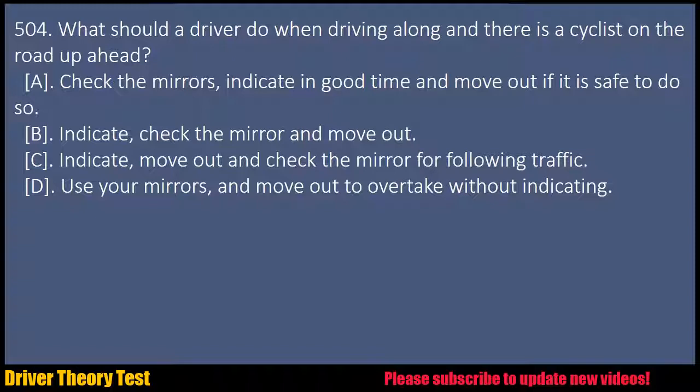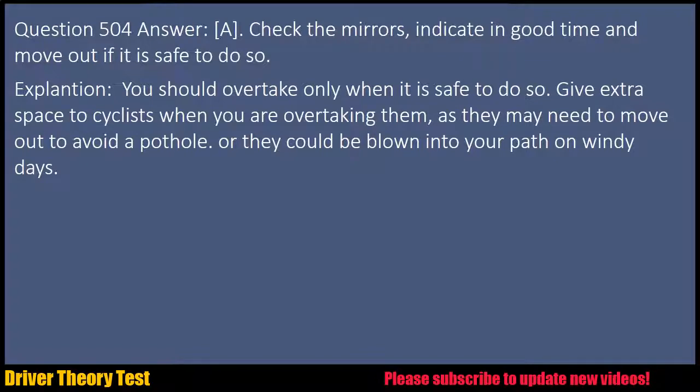Question 504: What should a driver do when driving along and there is a cyclist on the road up ahead? A. Check the mirrors, indicate in good time and move out if it is safe to do so. B. Indicate, check the mirror and move out. C. Indicate, move out and check the mirror for following traffic. D. Use your mirrors and move out to overtake without indicating. Answer: A. Check the mirrors, indicate in good time and move out if it is safe to do so. Explanation: You should overtake only when it is safe to do so. Give extra space to cyclists when you are overtaking them, as they may need to move out to avoid a pothole, or they could be blown into your path on windy days.